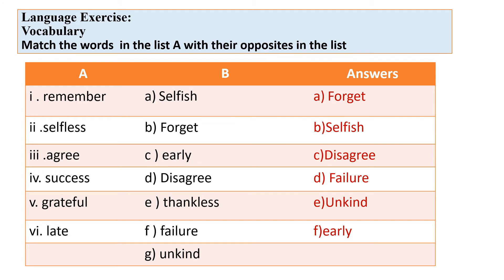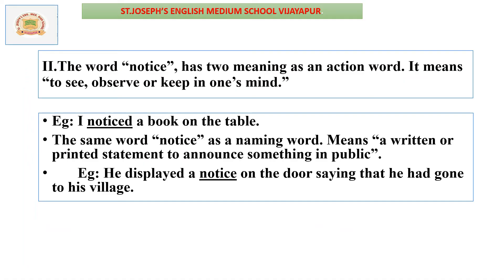Language exercise — vocabulary: Match the words in List A with the opposites in List B. The answers are: 'remember' opposite is 'forget,' 'selfless' opposite is 'selfish,' 'agree' opposite is 'disagree,' 'success' opposite is 'failure,' 'grateful' opposite is 'ungrateful,' 'late' opposite is 'early.'